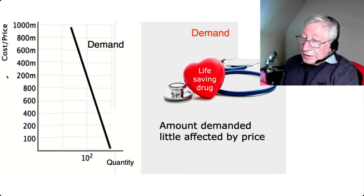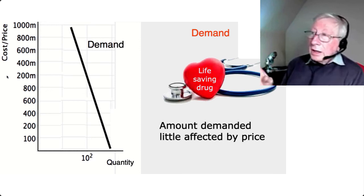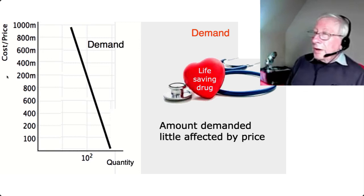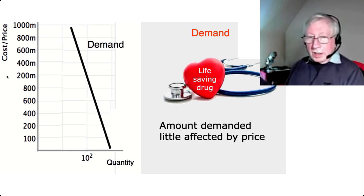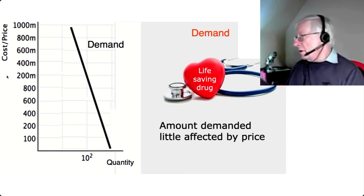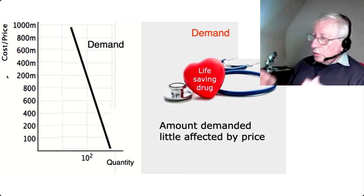We probably will buy less of pharmaceutical products that are very expensive compared to if they're very cheap, but the difference is not that great. For most products, demand is elastic. Think of mobile phones that nearly everybody has now — if mobile phones cost £5,000, very few of us would buy them, but if they cost £5, we'd all be buying them and throwing them away. So demand would vary quite a lot depending on the price.